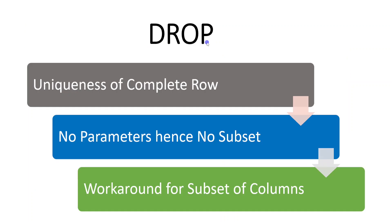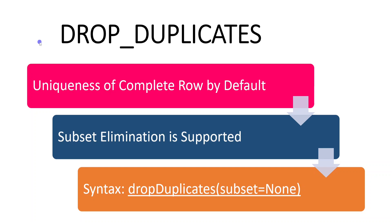To summarize: distinct is used to get uniqueness of a complete row, no parameter needed, and it cannot remove duplicates based on a subset — though there is a workaround with some shortcomings. Drop duplicates by default acts like distinct, identifying uniqueness of the complete row, but it also supports a subset of columns for duplicate elimination. The syntax is dropDuplicates with a subset list, and there is also an alternative syntax: drop_duplicates.